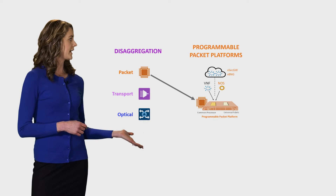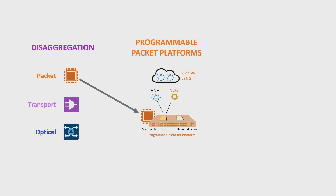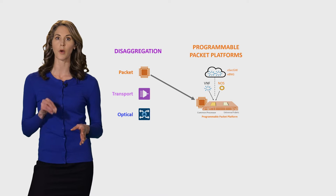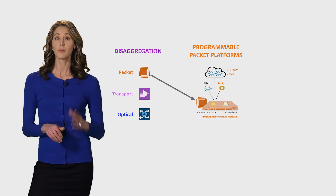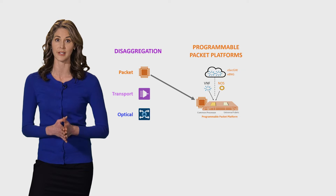The second component is the introduction of a new class of platforms called Programmable Packet Platforms. Based on commodity chipsets and supporting disaggregated network operating software, or NOS, these devices help to drive down network costs, particularly for notoriously expensive and proprietary router solutions.